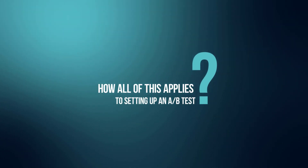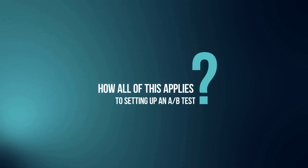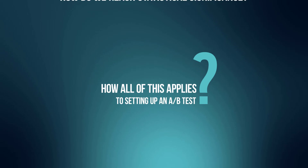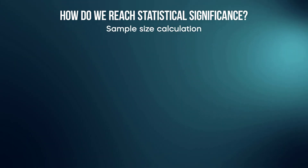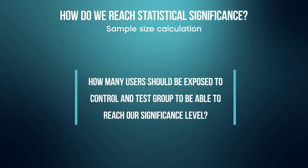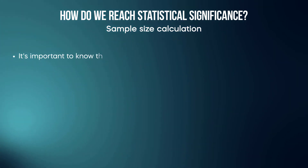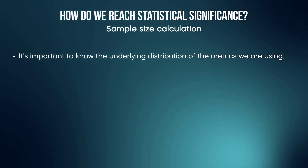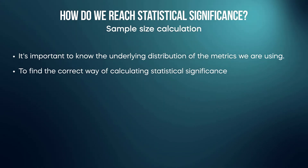How does all of this apply practically to setting up an A/B test? Knowing our minimum detectable effect, the desired statistical significance level, and the desired power of the test, we will be able to calculate the sample size — how many users should be exposed to the control group and to the test group to reach our significance levels. It is important to know the underlying distribution of the metrics we are using, and the next part will explain how that affects the sample size calculation.